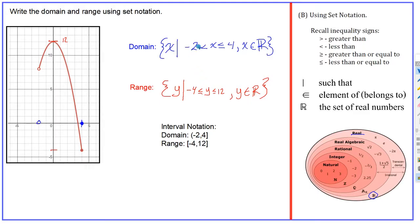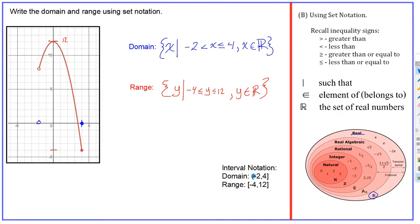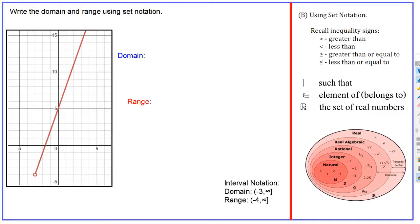In interval notation, a rounded bracket means that point's not included. For the domain, the lower limit is minus two and the upper limit is four, so you just put those two numbers in — use a square bracket if the point is included and a rounded bracket if it's not. For the range, minus four is the lowest and twelve is the highest, both included, so both get square brackets. In interval notation you don't have to specify the number system.